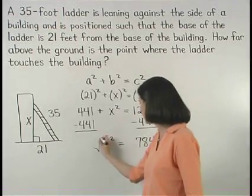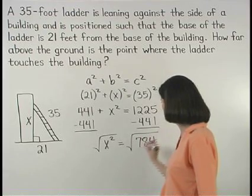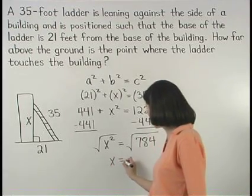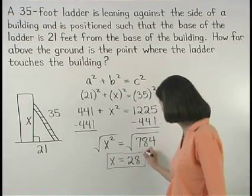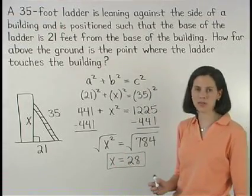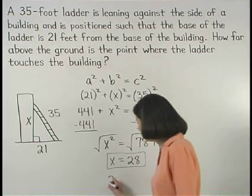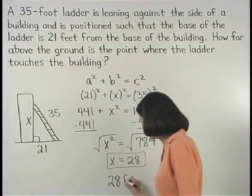And square rooting both sides, we find that x equals 28. So the point where the ladder touches the building is 28 feet above the ground.